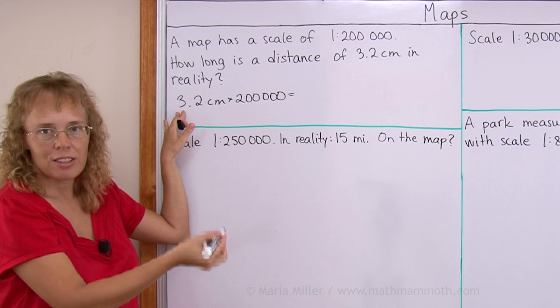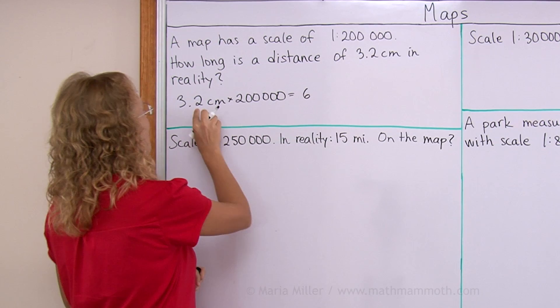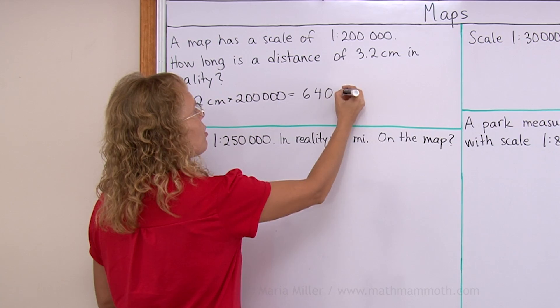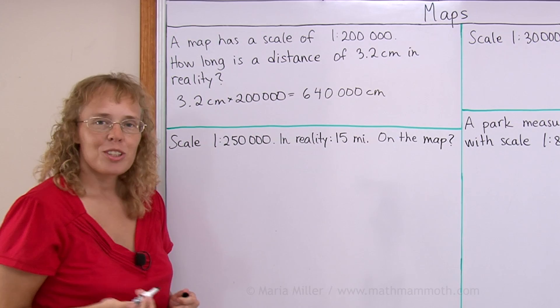Now if it was 3 times 200,000, then I would get 600,000. But this time I will get 600 and then 2 times 2, I get 4 here as my next digit. So 640,000 centimeters.